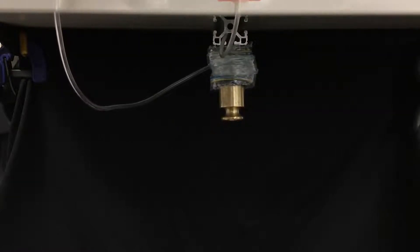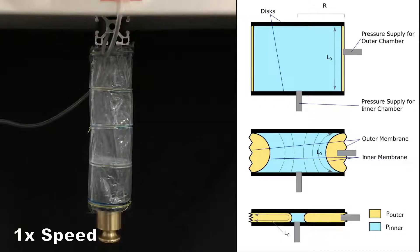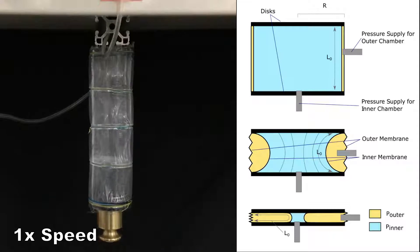The actuator is composed of two membranes nested inside each other and braced with rigid discs, forming an inner and outer chamber.